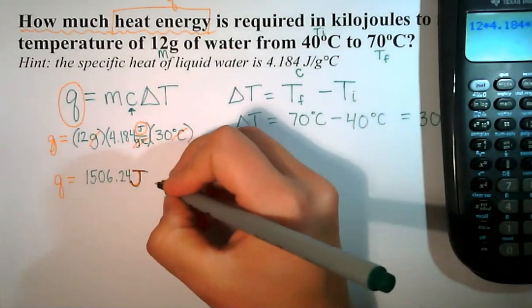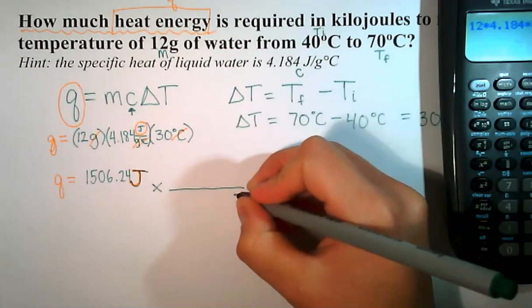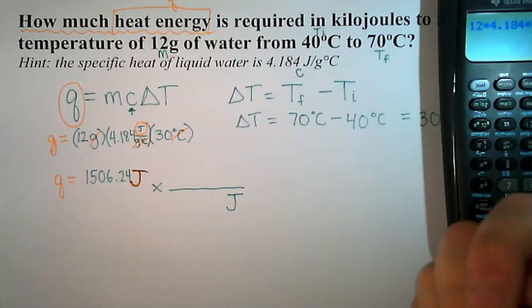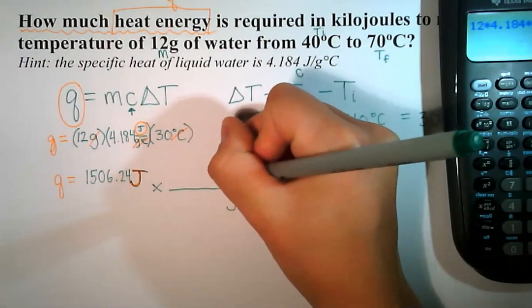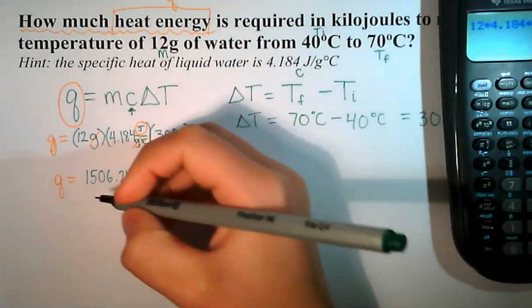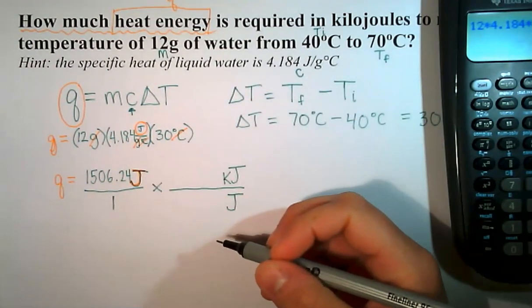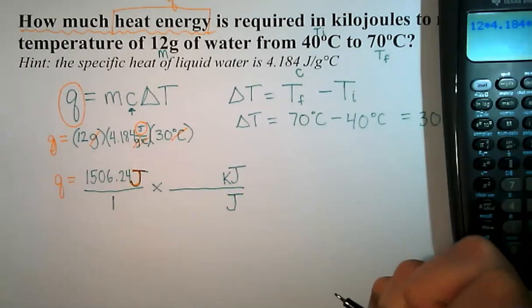We can do this just using some dimensional analysis. If we want joules to cancel, that unit needs to go in the bottom, and we want to convert to kilojoules. This is a metric unit conversion. I'm going to start by putting my starting value over one, just to remind us that it's up in the numerator, and it's a joules to kilojoules conversion.